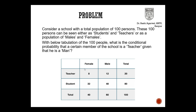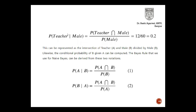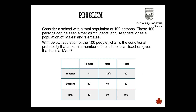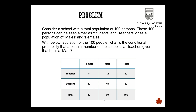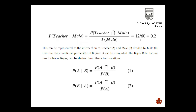Just to refresh the concept of Bayes' theorem, let us take an example. Suppose I have teachers and students: 20 teachers and 80 students, with a distribution of 40 females and 60 males. Now suppose I am trying to find the conditional probability that a certain member of the school is a teacher given that he is a man — that is, probability of teacher given male. Using Bayes' theorem: probability of teacher intersection male divided by probability of male. I have 12 male teachers out of 100, so that is 12/100. The probability of male is 60/100. So ultimately my probability is 12/60, which is 0.2.